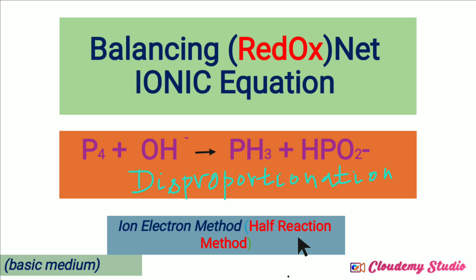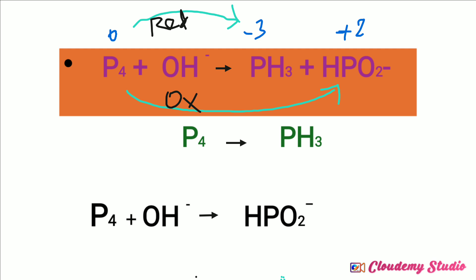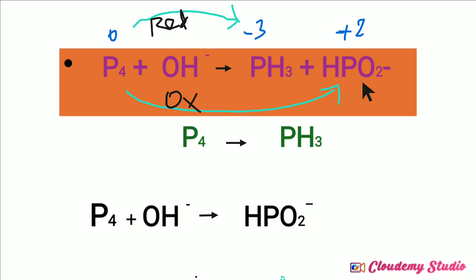Let's balance this reaction by the half-reaction method, or ion electron method. The oxidation number of phosphorus in the free state is zero. The oxidation number of phosphorus in phosphine is minus three. The oxidation number of phosphorus in hydrogen phosphite ion is plus two.